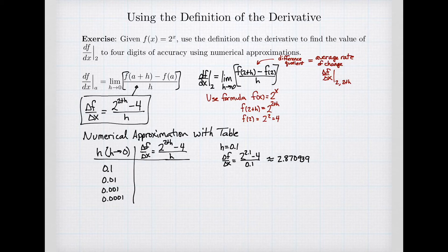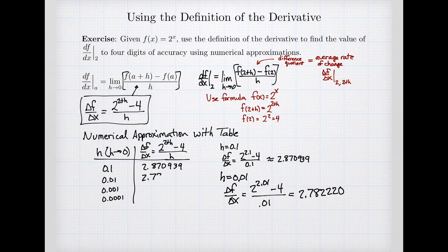Now, because my problem asked me to find the answer to four digits of accuracy, I have to include at least the first four digits. And I'm always going to include a couple extra to see if they've stopped changing or not. So the first entry in my table will be this value. I'm going to do the same thing for each of the different values. So when I do h equals 0.01, my average rate of change is 2 to the power 2.01 minus 4 divided by 0.01. And on the calculator, my next entry in my table is 2.782220.